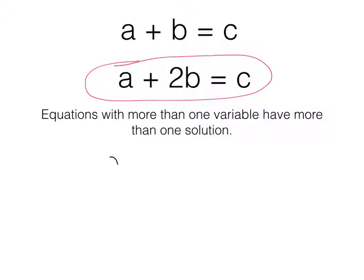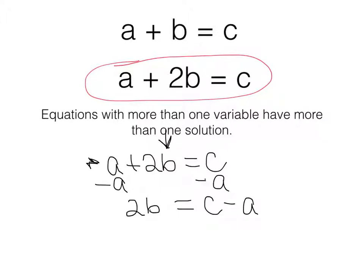Okay, so you should have had a plus 2b is equal to c. I'm solving for b. Just like the first problem, we are going to use inverse operations for a, which would leave me with 2b is equal to c minus a.